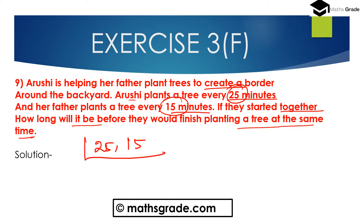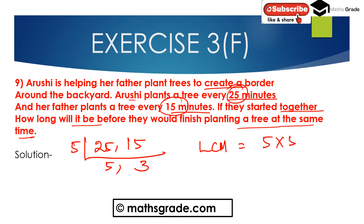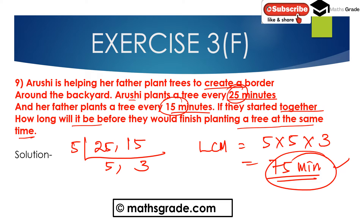Dividing with prime number 5: LCM is 5 multiplied with 5 multiplied with 3, which is 75 minutes. So it will take 75 minutes before they would finish planting a tree at the same time. If they started together, it will take 75 minutes. So 75 minutes is the LCM of 25 and 15, and they would finish planting a tree at the same time.